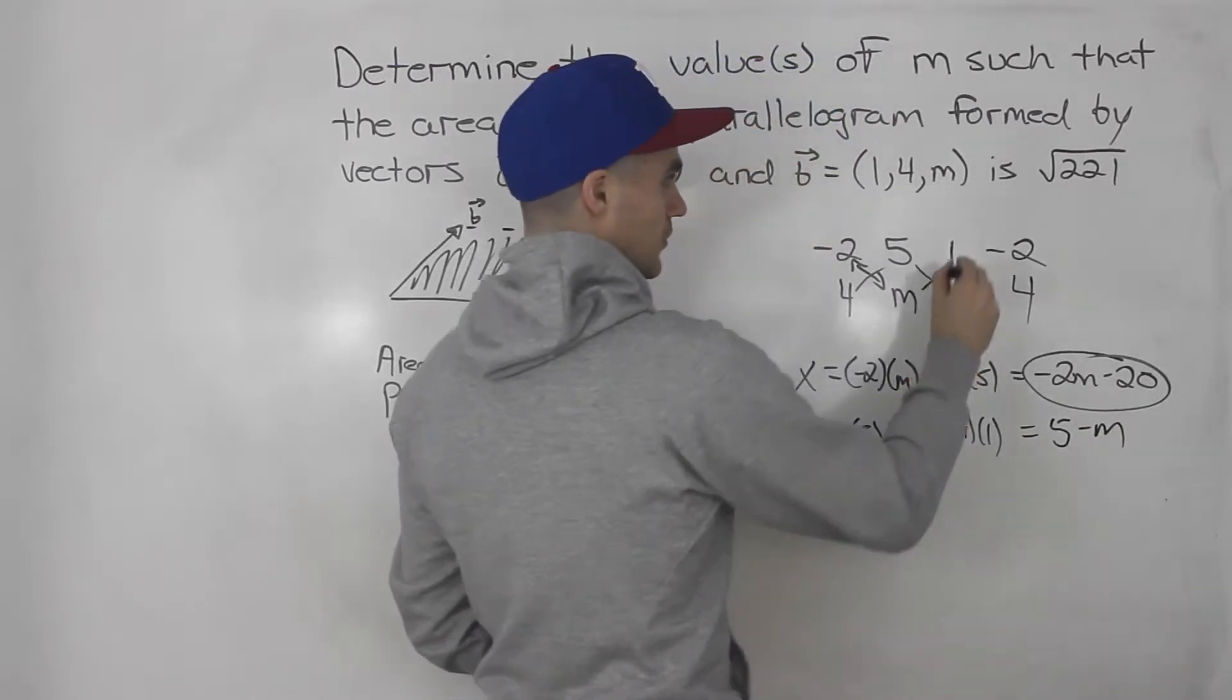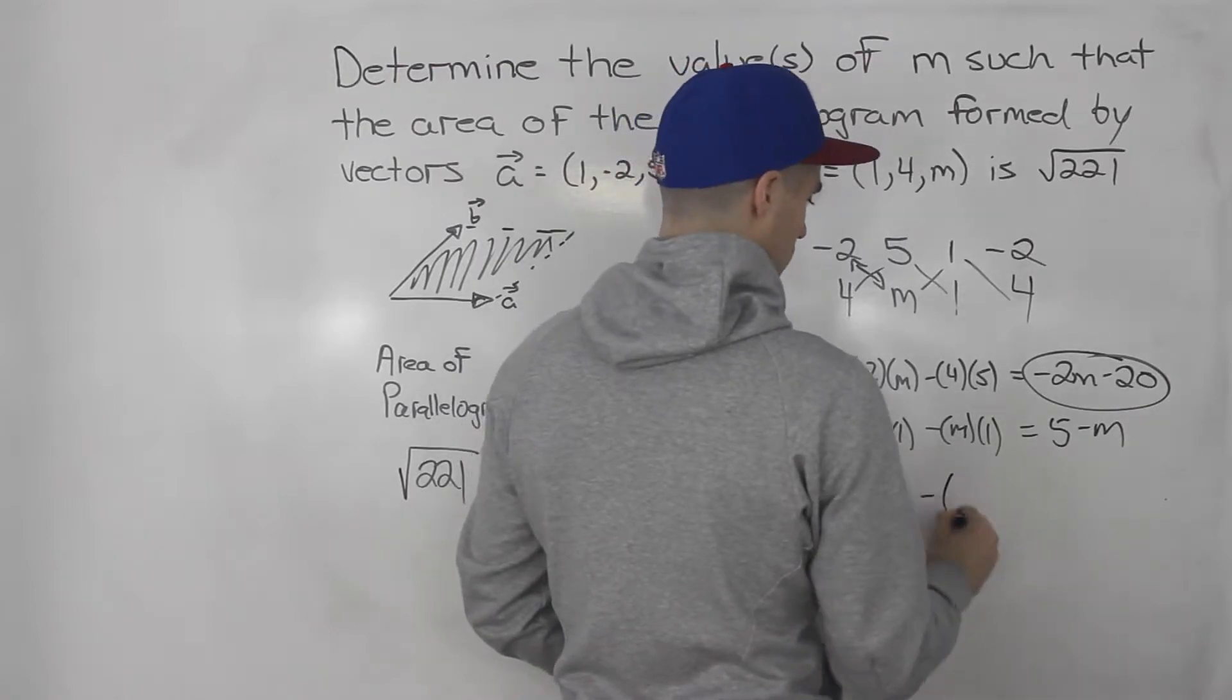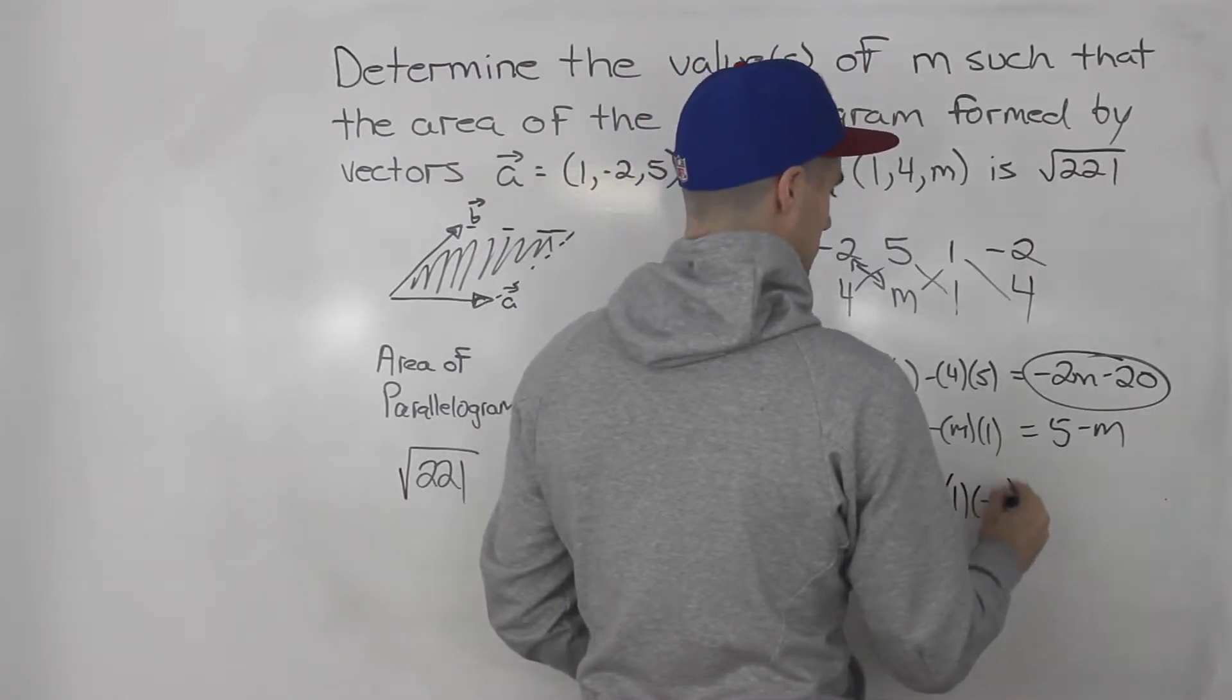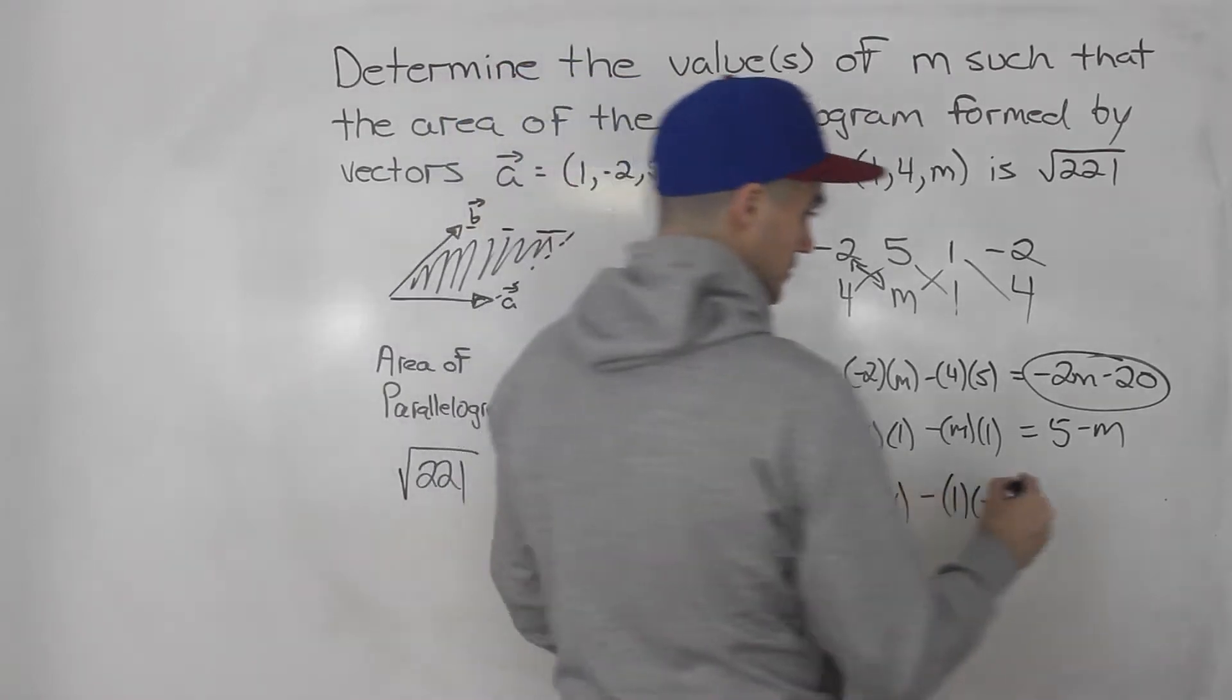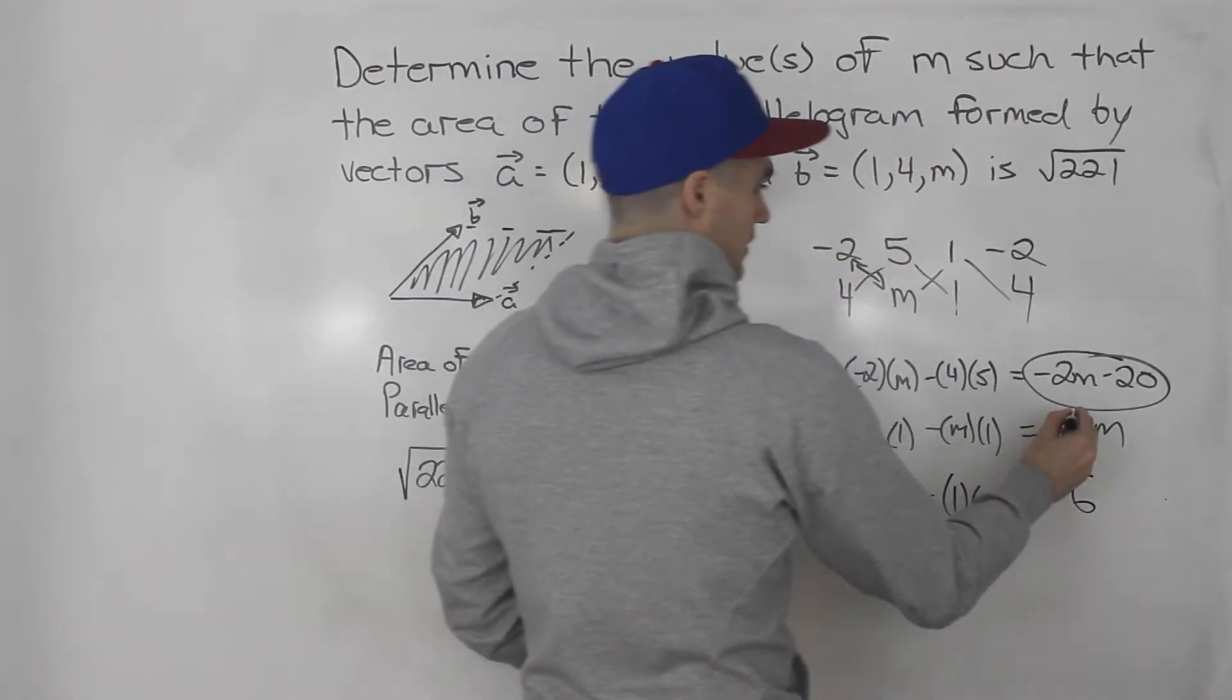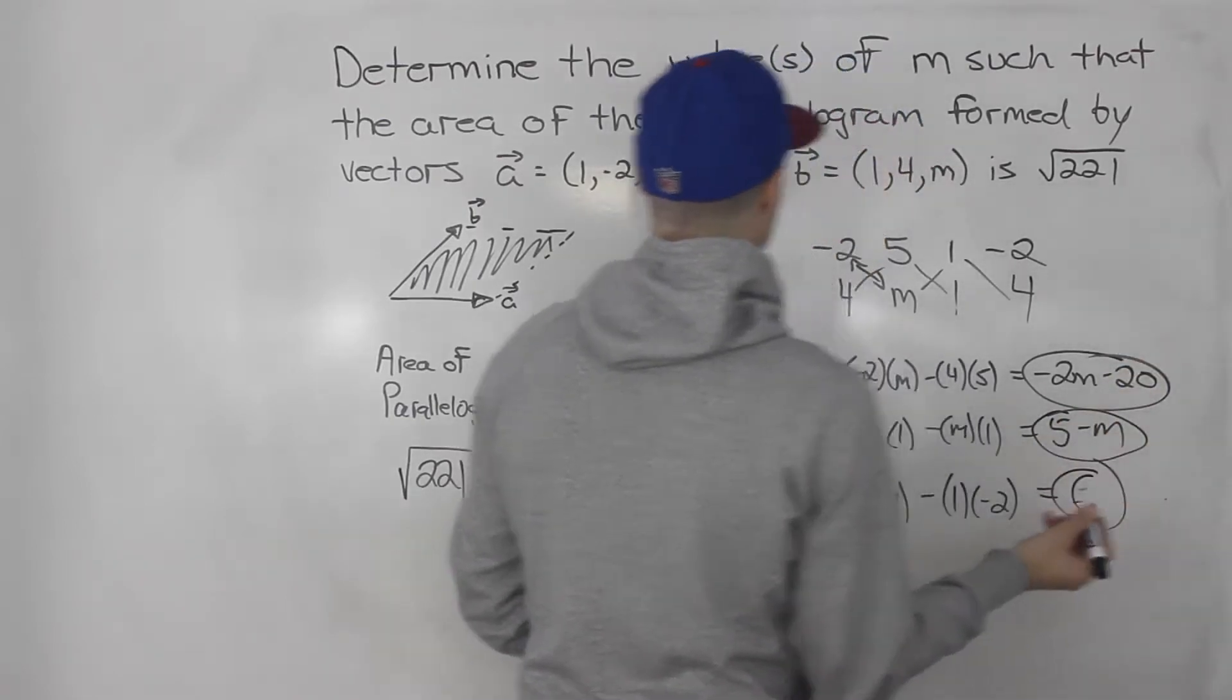And then the z component, 1 times 4 minus 1 times negative 2. These two negatives make a positive. So we got 4 plus 2, which is 6. So cross product: x component, y component, z component.